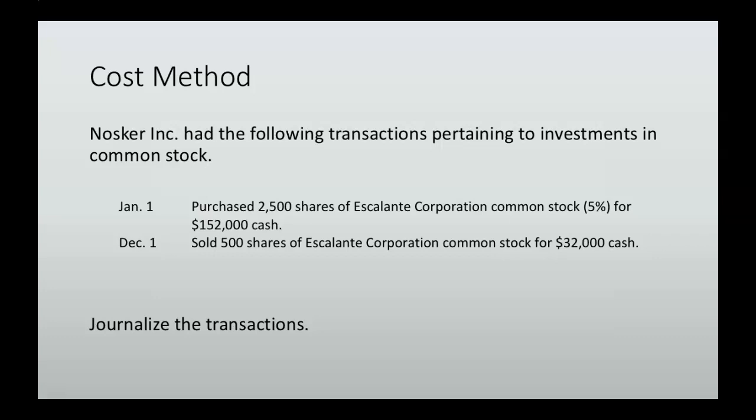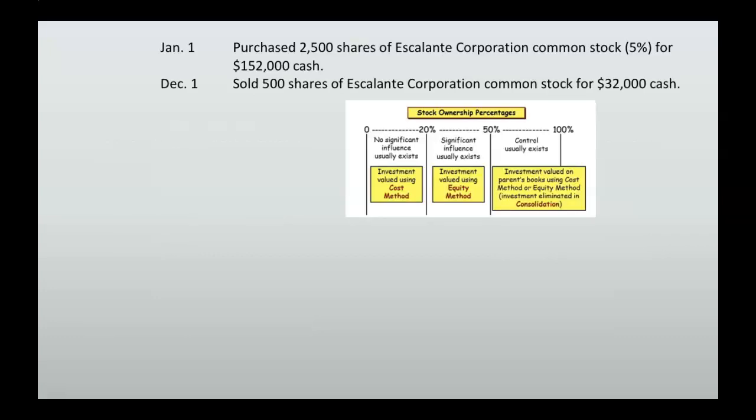Now let's work on the journal entries. First, the purchase of stock on January 1st. When you purchase stock in another company, we call that account 'stock investments' because you are investing in another company's stock, and we use cash to pay for it. We want to show that cash decreased by $152,000, and we also need to increase our stock investments account by $152,000.